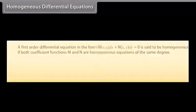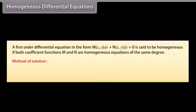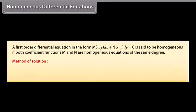Homogeneous differential equations: A first order differential equation M(x,y)·dx + N(x,y)·dy = 0 is said to be homogeneous if both coefficient functions M and N are homogeneous equations of the same degree. Method of solution: use the substitution y = vx (or x = uy), after which the resulting equation becomes a separable equation.